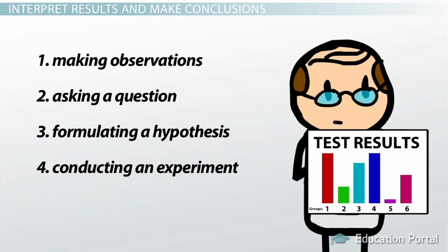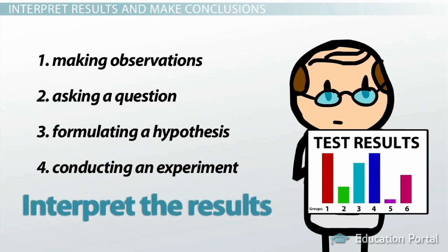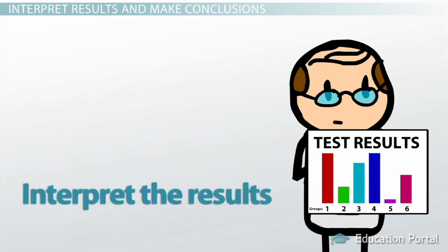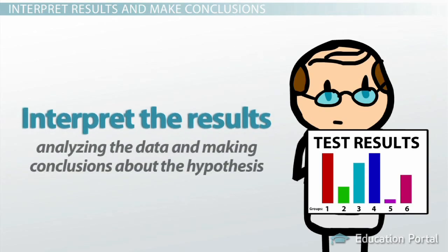Once the experiment has been conducted and all of the data has been collected, the next step in the scientific method is to interpret the results. The interpretation of the results includes analyzing the data and making conclusions about the hypothesis.